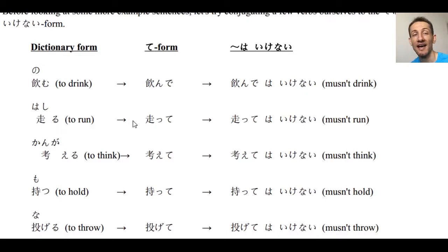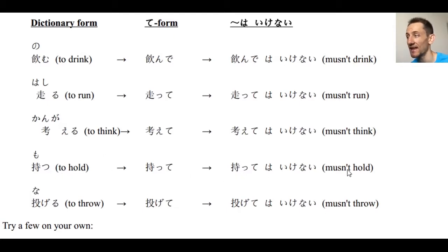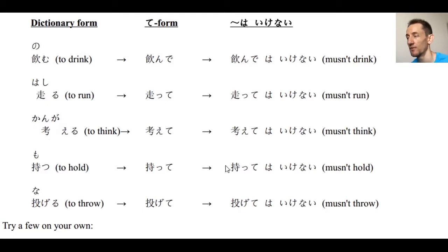Hashiru — to run — becomes hashitte, so hashitte wa ikenai. Kangaeru becomes kangaete, so kangaete wa ikenai — mustn't think. Motsu — to hold — becomes motte, so motte wa ikenai. Nageru — to throw — becomes nagete, so nagete wa ikenai — must not throw. Maybe it's against the rules or it's dangerous: nagete wa ikenai, dame desu.